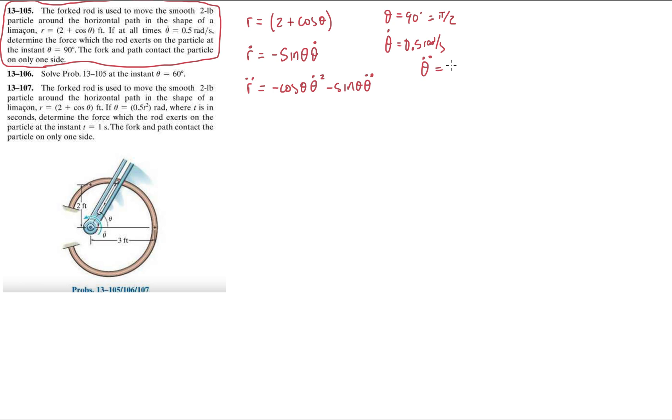Theta double dot is actually 0 because they're telling us that it's constant angular velocity. Now that we have all this, let's plug the numbers and evaluate all these equations. So r at theta equals pi over 2 is just going to be 2 because cosine 90 is 0. r dot is minus 0.5 and then r double dot is 0. Cosine 90 is 0, theta double dot is 0, so this equation is 0.